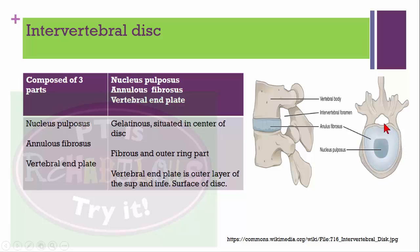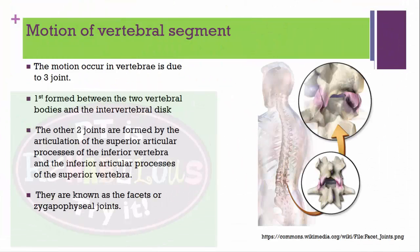Motion in the vertebral segment occurs due to three joints. The first joint is formed between two vertebral bodies and the intervertebral disc. The other two joints are formed by articulation of the superior articular process of the inferior vertebra and the inferior articular process of the superior vertebra — these are known as zygapophyseal joints or facet joints.